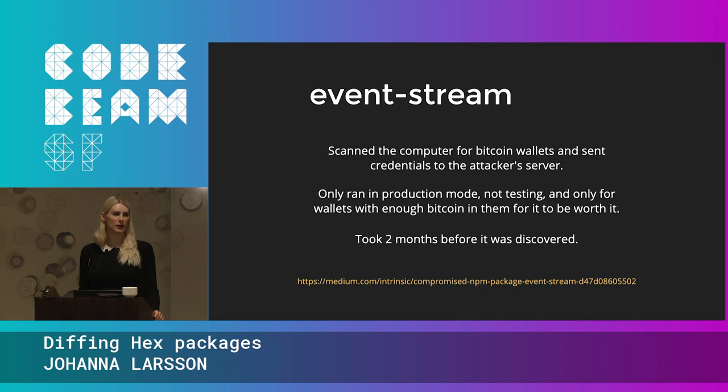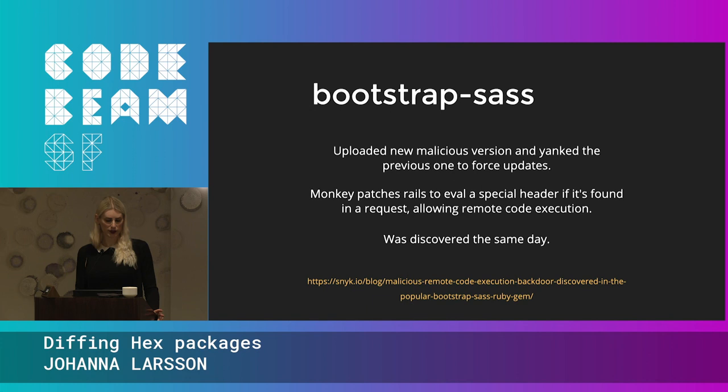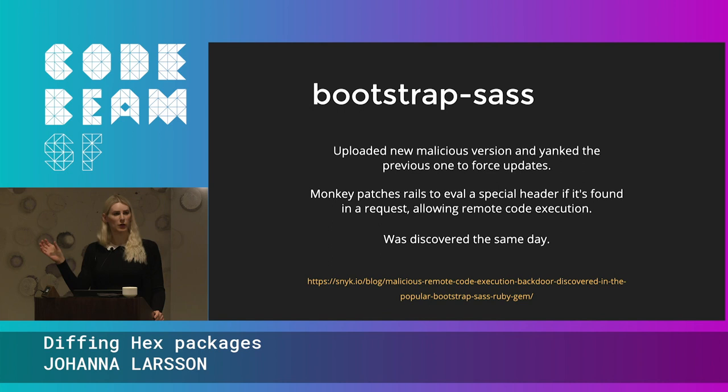The malicious code in EventStream was only available in the pre-compiled or minified files. So if you used the original source code, you were fine — but in the minified code, that's where the malicious code was. And then finally, here's the Ruby gem example of the sort of runtime attack. Bootstrap Sass would monkey-patch Rails to eval a special header if it's found in a request. If a request contained a special header key, it would eval whatever's in the header value — giving you remote code execution. That was also discovered the same day, luckily.